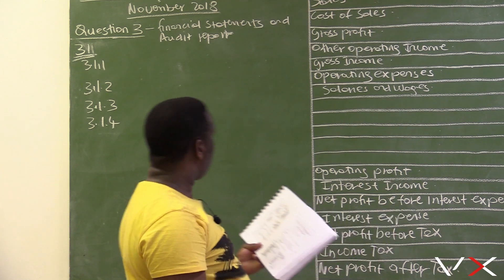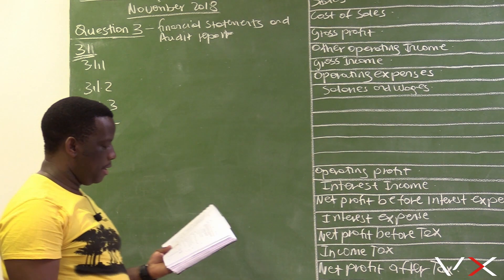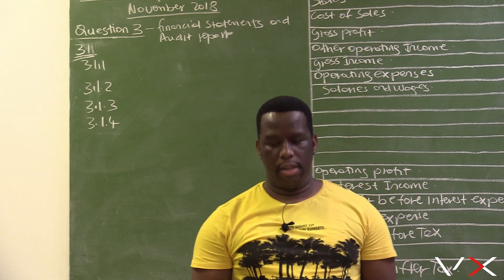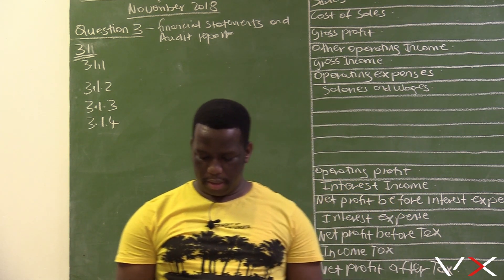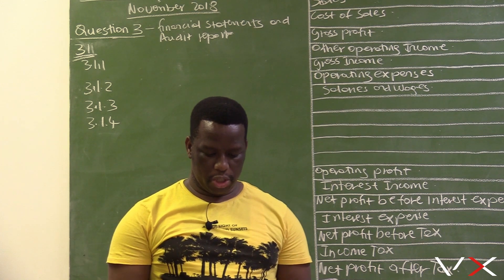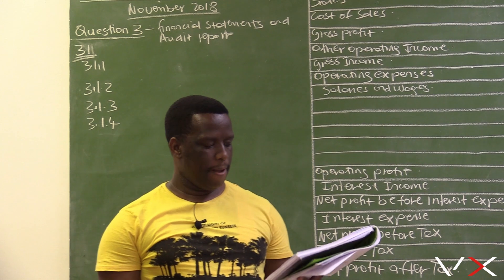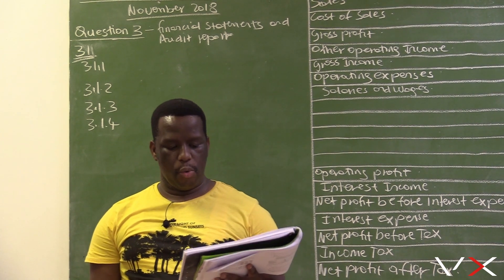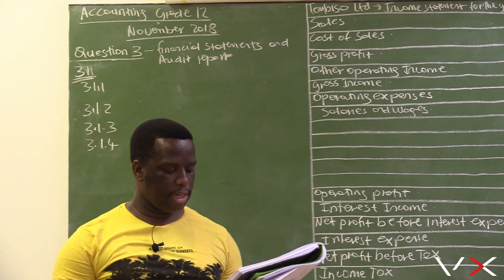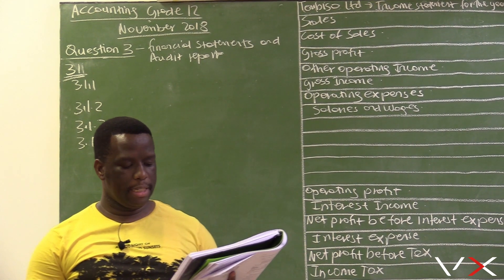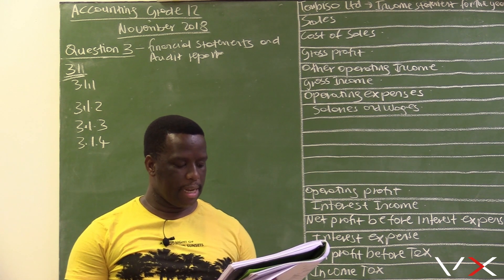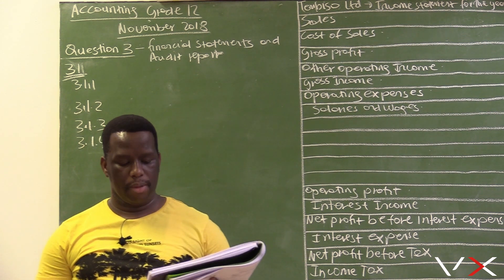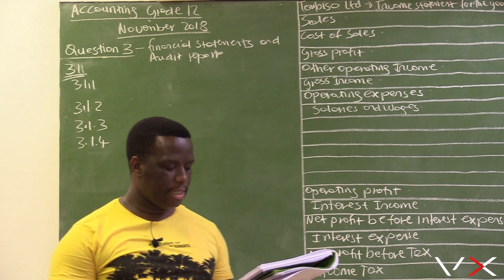We are starting with 3.1. It is always advisable that students have the question paper in front of them during these lessons. We are on page 8 of the question paper, November 2018. Question 3.1.1 says: indicate where each of the following items would be placed in the financial statements by choosing a term from the list below. Write only the answer next to the question numbers 3.1.1 to 3.1.4 in the answer book.